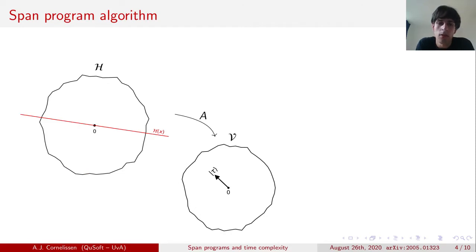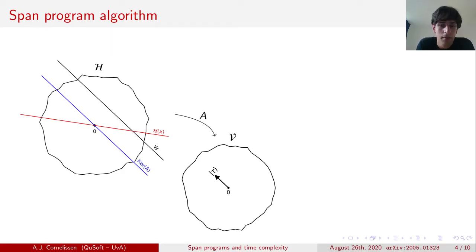To that end, we start off with the visualization that we had from our previous slide. The first observation that we make is that the kernel of A is a subspace of H, and hence can be drawn in much the same way as we also drew the subspace H_x. Next, we define the set W, which is the set of all the vectors in H that are being mapped to the target vector tau. We can see that this set W is an affine subspace of H, which runs parallel to the kernel of A. The smallest vector in W we call w0. We can see that this vector w0 is in the orthogonal complement of the kernel of A.